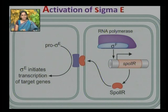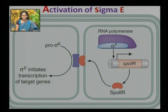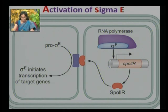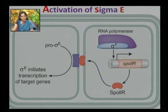Sigma E initiates the transcription of target genes which leads to the synthesis of many proteins that catalyze a series of events, leading the moist metabolizing vegetative cell to a relatively dry, dormant but resistant endospore.